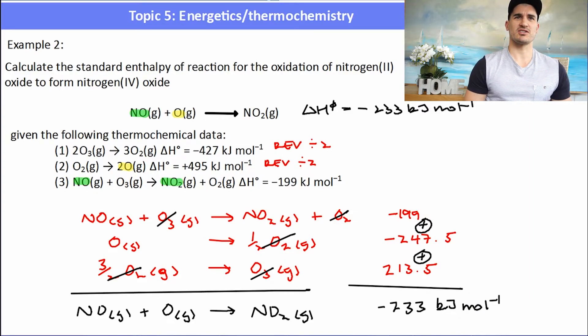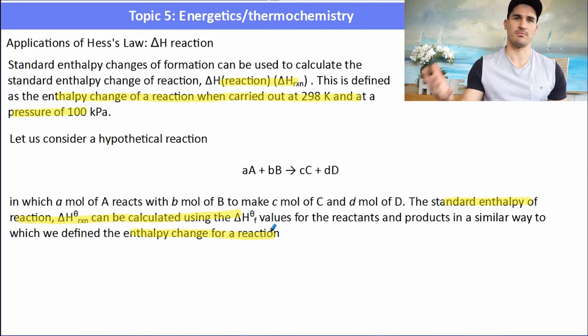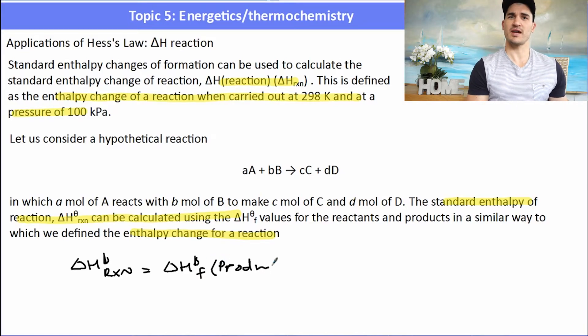Alright, so what are some applications of Hess's law? Well, what we need to use Hess's law for is to find the delta H of a reaction. And this is defined as the enthalpy change of a reaction when it's carried out at standard temperature and pressure, 298K and 100kPa. So if we have a hypothetical reaction where some stoichiometric ratio reacts with A and the stoichiometric reaction with B to form C and D, we can work out the delta H of reaction by simply knowing the delta H of formation of the products and then taking that away from the delta H of formation of the reactants. So the delta H of reaction will be the products, take away the reactants.